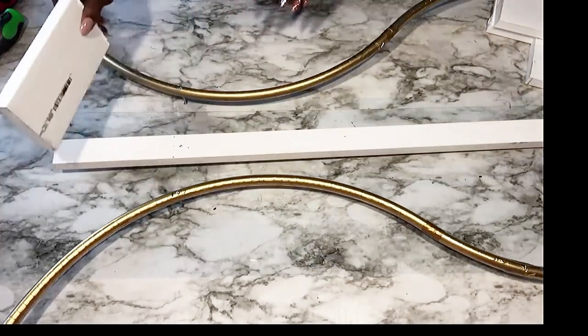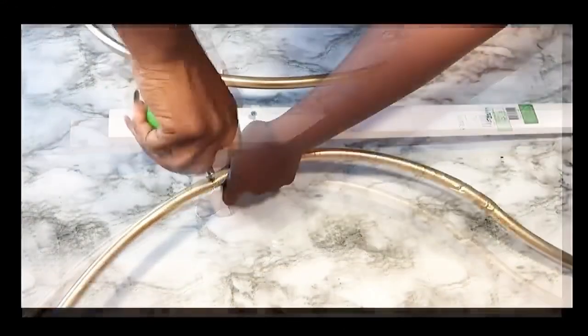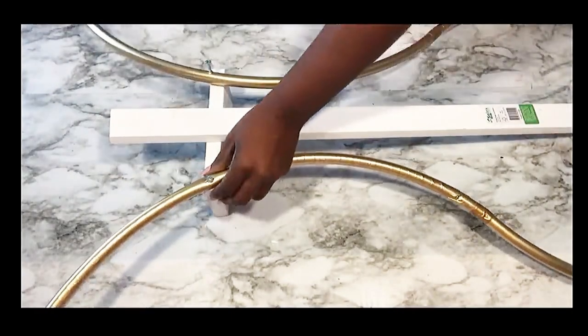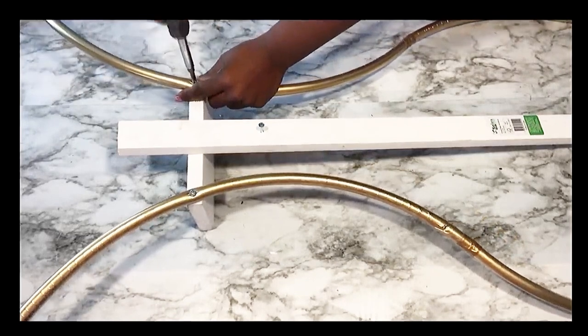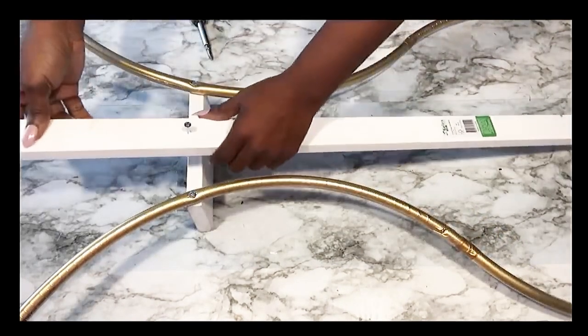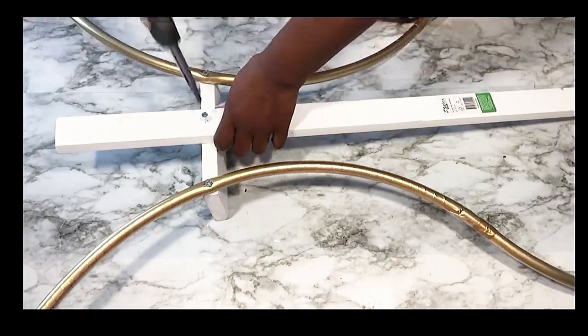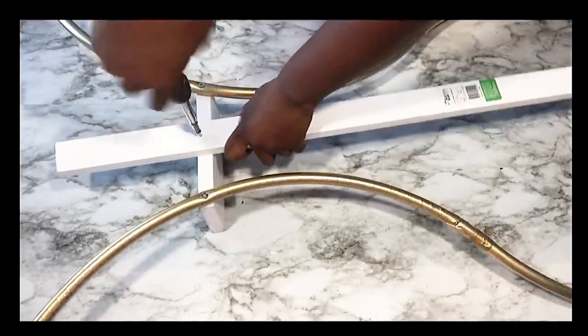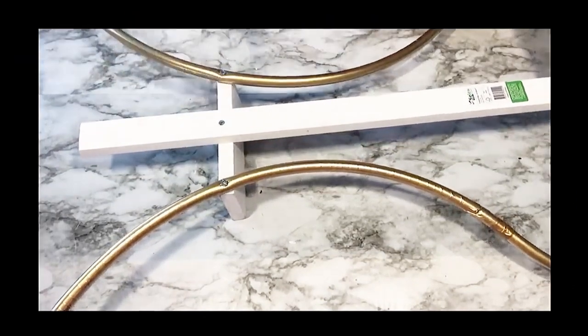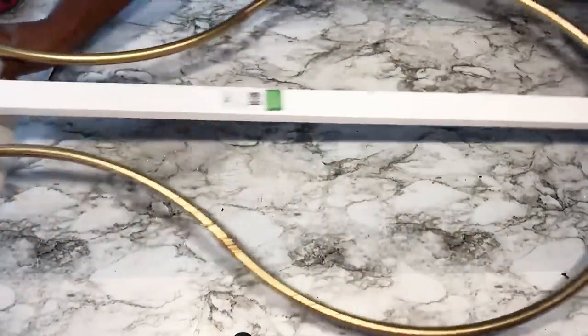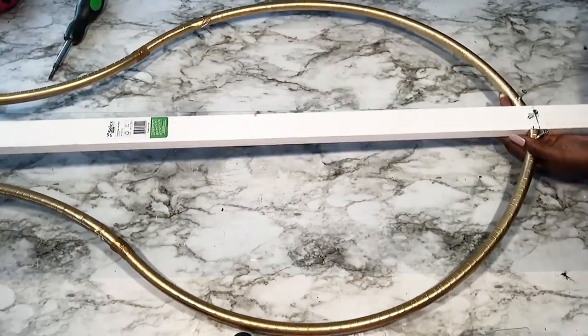This is how the first shelf is going to be attached to it, so now I have to turn everything over to make it easy for me to attach them together. I'll be repeating the same thing to the bottom part.